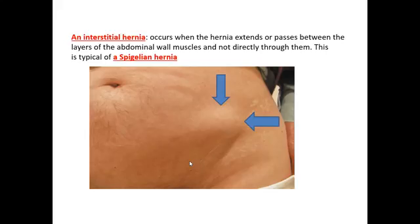An interstitial hernia is one where the hernia extends or passes between the layers of the abdominal wall rather than directly through them. The abdominal wall is composed of three muscle layers: the transversus, internal oblique, and external oblique. When hernia contents enter between two of these layers, it is called a Spigelian hernia. You can see in the image a bulge in the lateral abdominal wall situated between two layers of abdominal muscles.